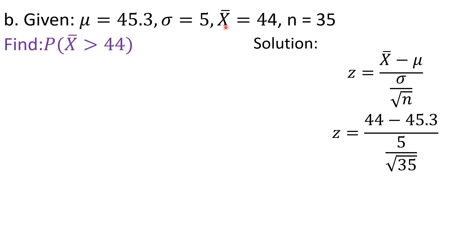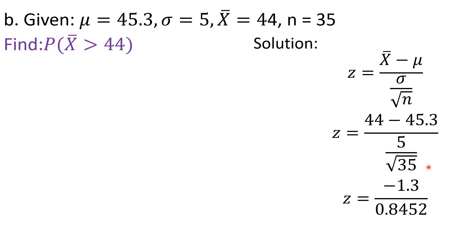By substitution, x is 44, the mean is 45.3, and the denominator is 5 over the square root of 35. Then 44 minus 45.3 is negative 1.3. The denominator 5 divided by the square root of 35 is approximately 0.8453. Dividing negative 1.3 by 0.8453 gives z equal to negative 1.54.